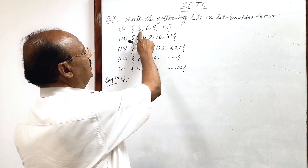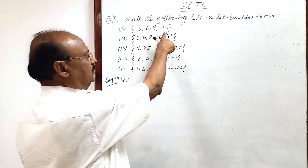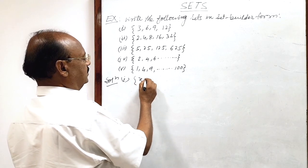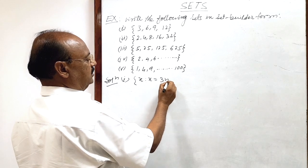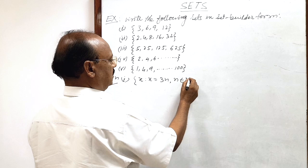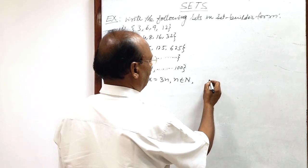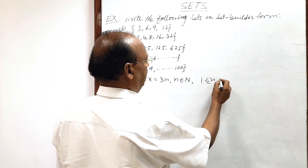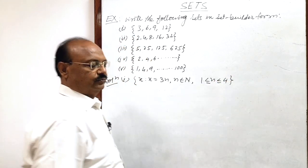This is 3 into 1, 3 into 2, 3 into 3, 3 into 4. So in set builder form, we can write x such that x is equal to 3n, where n belongs to the set of natural numbers, and n lies between 1 and 4.